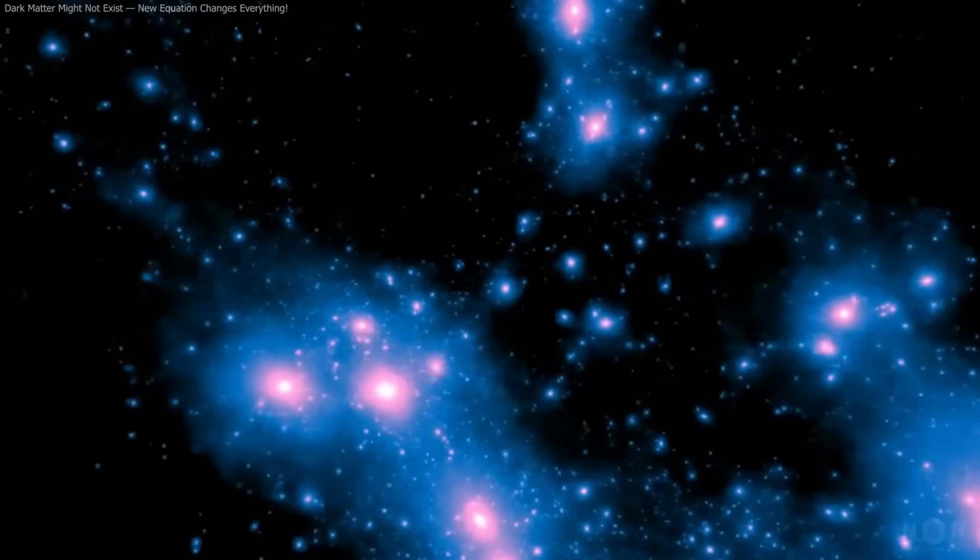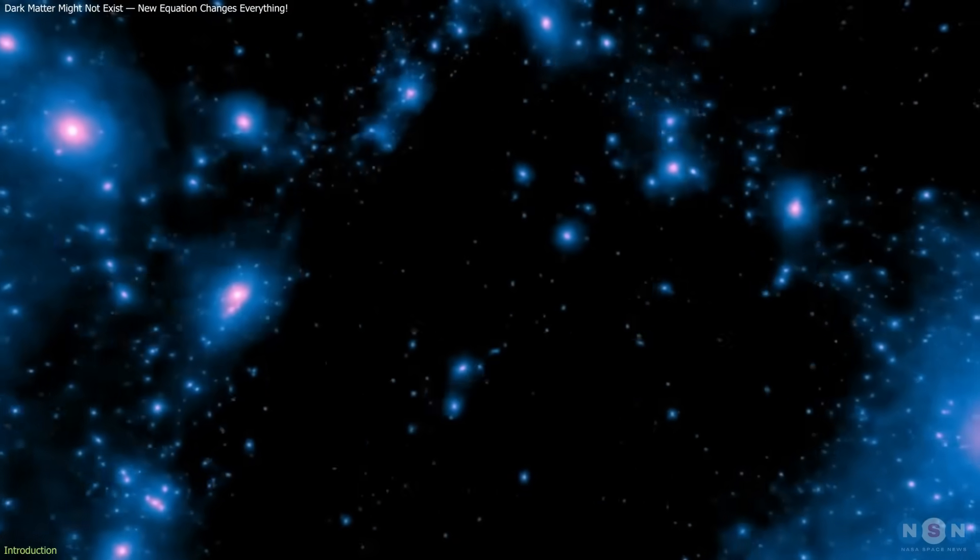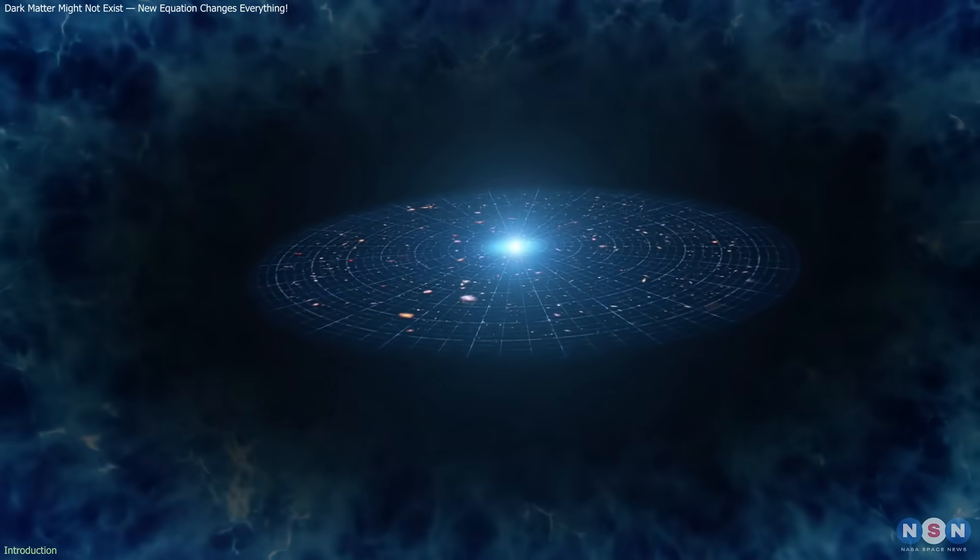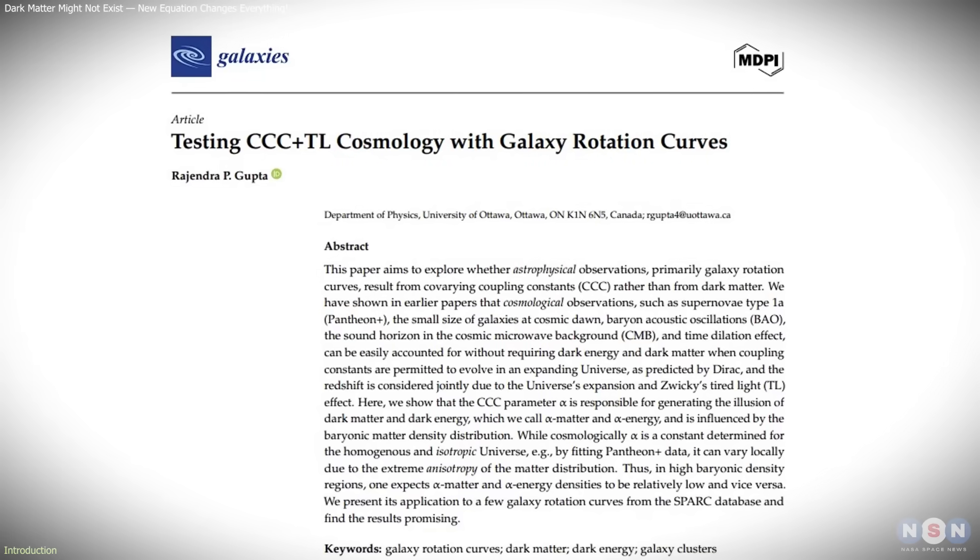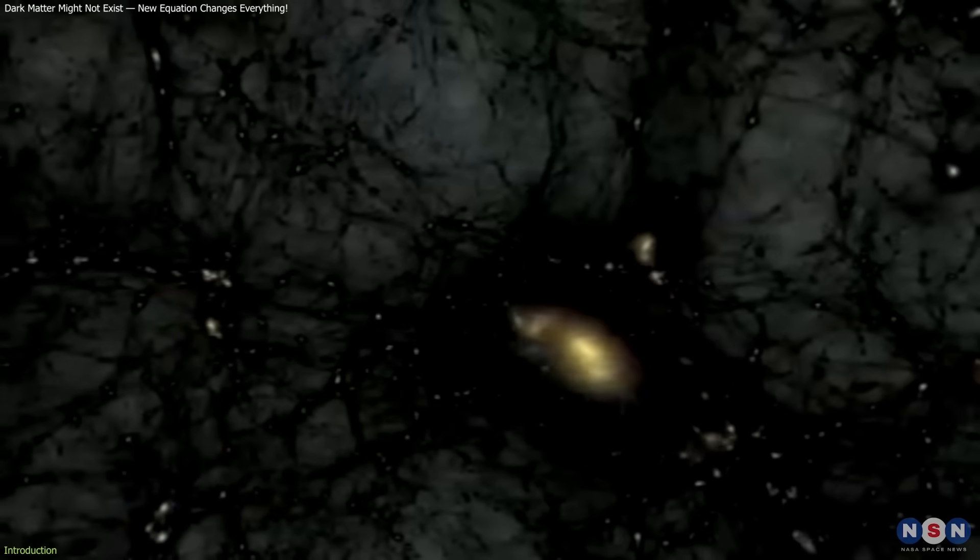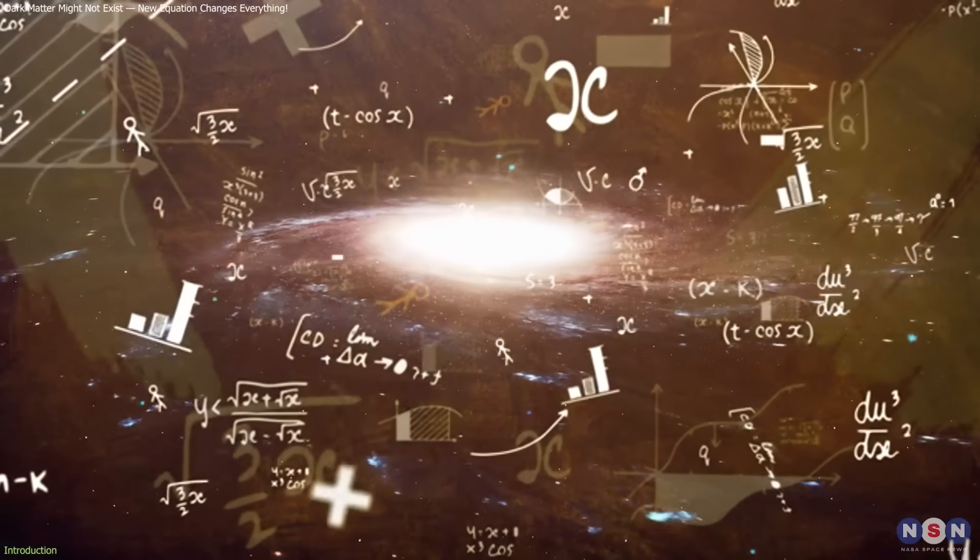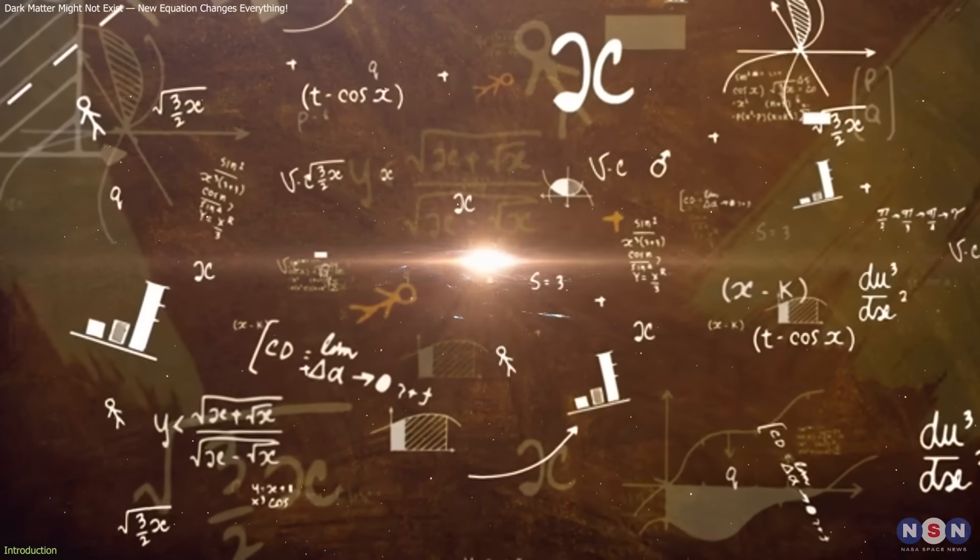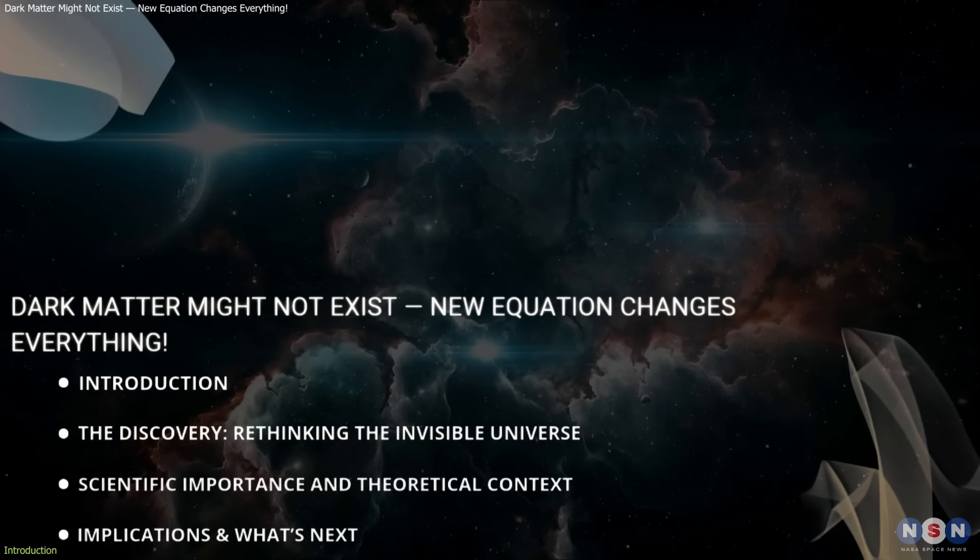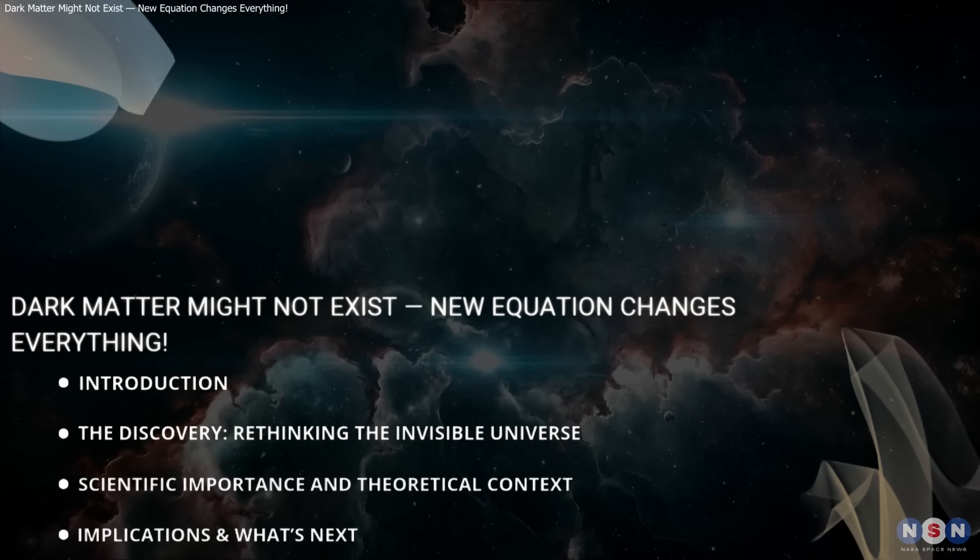For decades, scientists have believed that most of the universe is made of dark matter and dark energy, invisible components shaping galaxies and driving the universe's expansion. But a new study from the University of Ottawa challenges this long-held view. It suggests these mysterious elements might not exist at all. Instead, their effects could be illusions caused by subtle changes in the laws of physics themselves. In this video, we'll explore what this new theory proposes, how it could rewrite our understanding of the cosmos, and what it means for the future of cosmology.